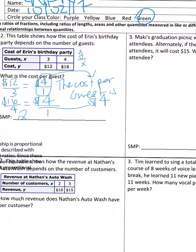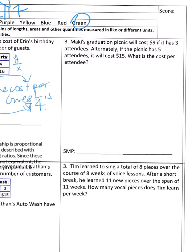Finally, our last question, it says, Mackie's graduation picnic will cost $9 if it has 3 attendees. Alternately, if the picnic has 5 attendees, it will cost $15. What is the cost per attendee?